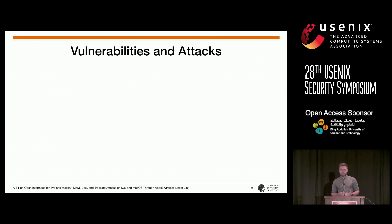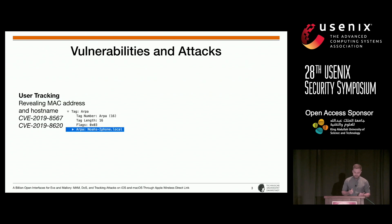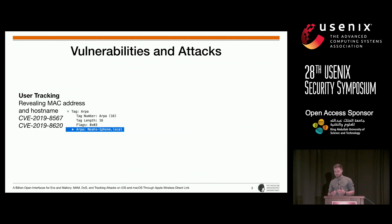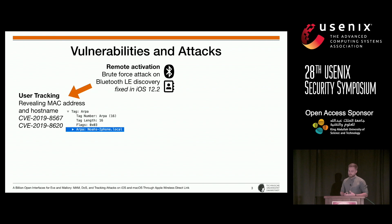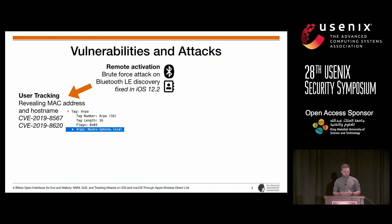We were able to mount a user tracking attack as AWDL leaks the Wi-Fi chip's real MAC address and also its host name, which in the default case contains the user's name. We made the attack practical using a remote activation attack, which exploits the discovery mechanism of Bluetooth LE and enables us to turn on AWDL interfaces on nearby devices.